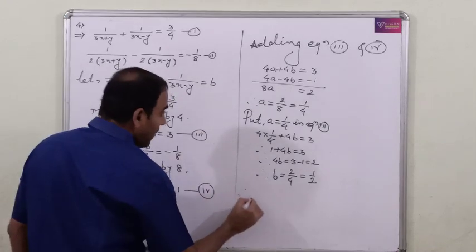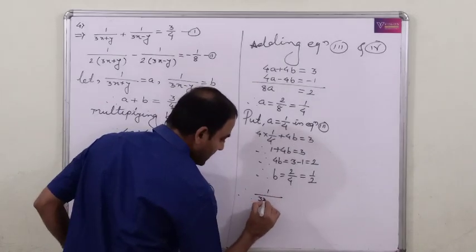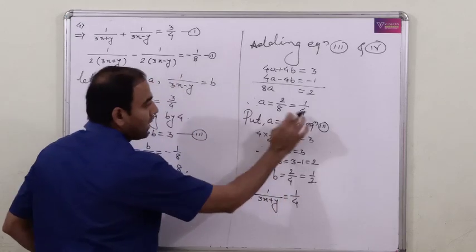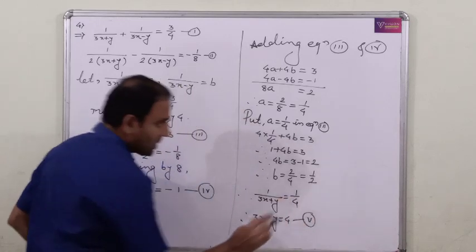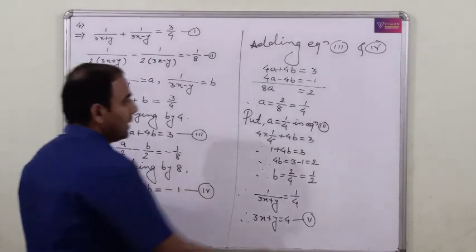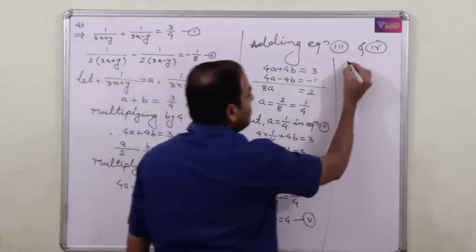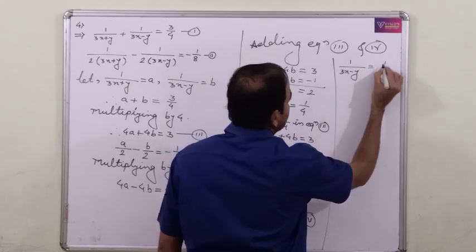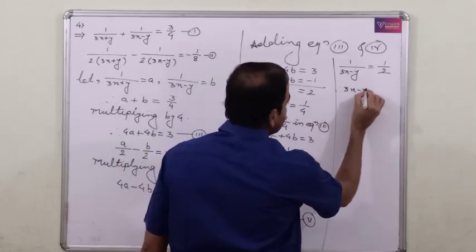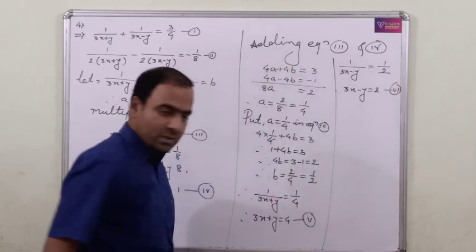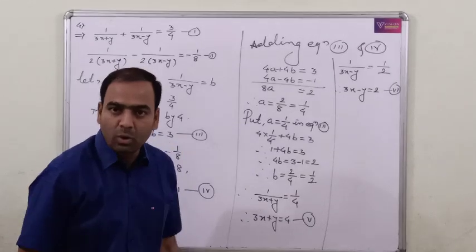Now resubstitute. Since A equals 1 upon (3x plus y) equals 1 by 4, by cross multiplication 3x plus y equals 4. This is the fifth equation. And B equals 1 upon (3x minus y) equals 1 by 2, so 3x minus y equals 2. This is the sixth equation.